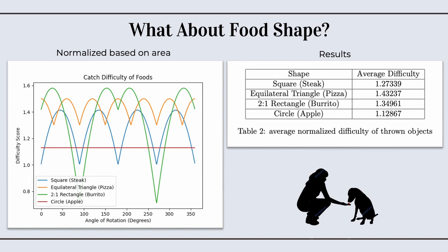So, as we can see, according to our model, the shape of the object actually does determine how difficult it is to catch.